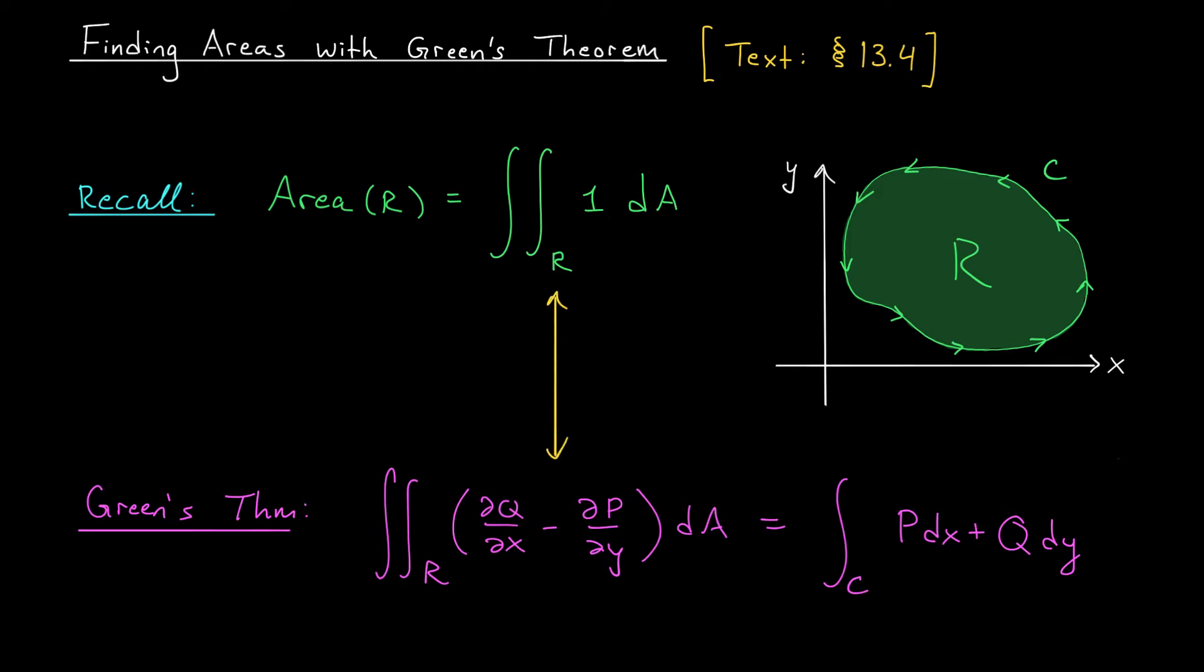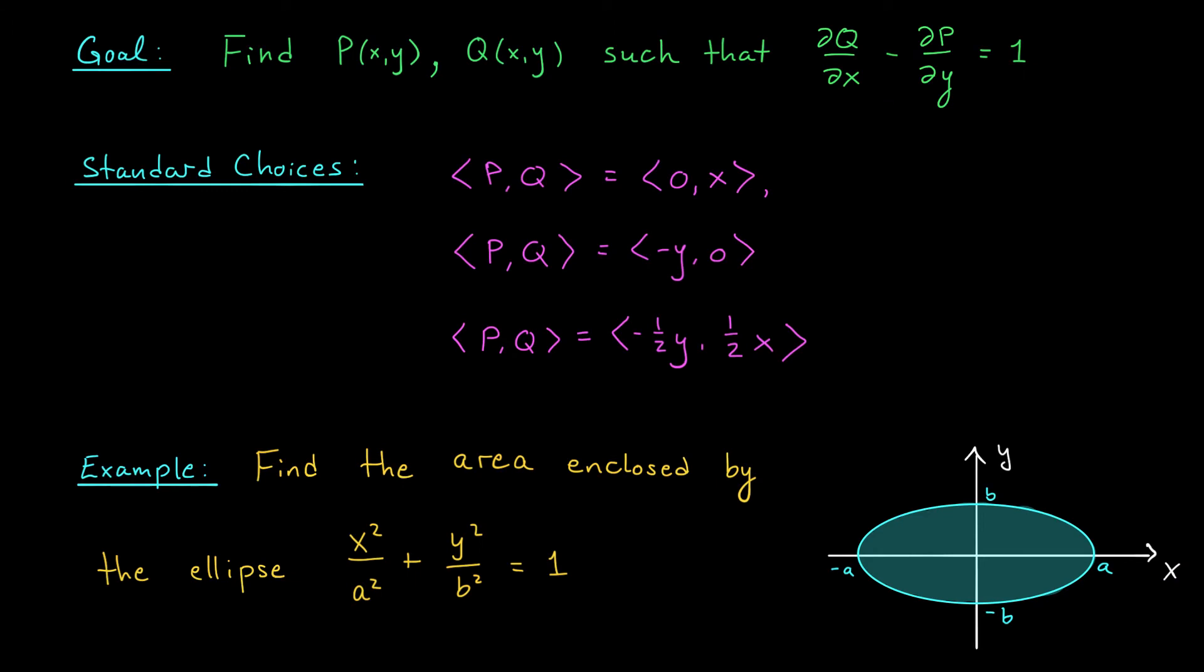If we can find functions P and Q such that ∂Q/∂x - ∂P/∂y is equal to 1, well then we have a path. We have a path from this double integral to this double integral and then therefore to this line integral. So our goal is to find these functions P and Q. Now it may sound hard to find functions P and Q such that ∂Q/∂x - ∂P/∂y equals 1, but it turns out that there are some easy options out there.